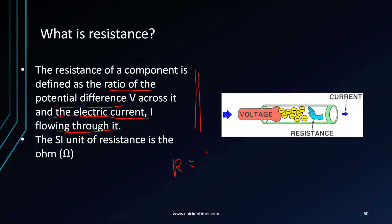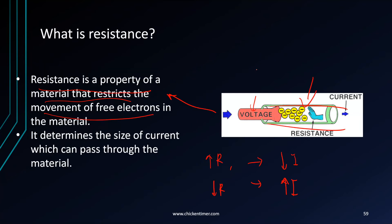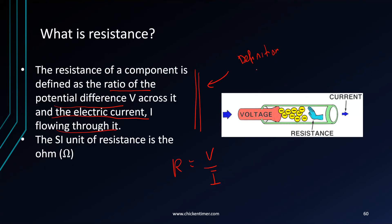If a question asks for the definition, you should be quoting the technical definition — the ratio of potential difference to current — and not the informal one. The SI unit is ohms. So in exams, if asked for the definition of resistance, quote the technical definition. The first informal one is more for understanding purposes.